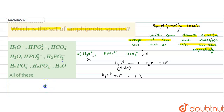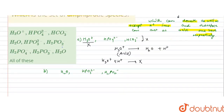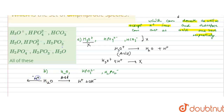Moving to the second option: H₂O, HPO₃²⁻, and H₂PO₂⁻. Checking H₂O first — water can release H⁺ ions to form OH⁻, acting as an acid. It can also accept H⁺ ions to form H₃O⁺, acting as a base. Therefore, water is an amphiprotic species.